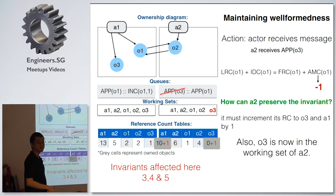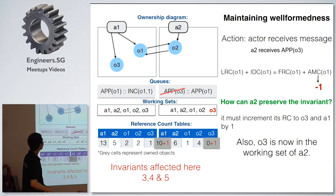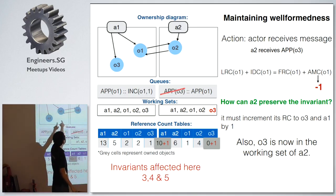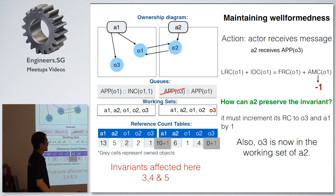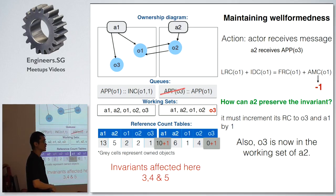O2 can have a reference to O1 — there could even be a cyclic reference — but it doesn't matter in this case because we don't count O-to-O references. We only count A-to-O references. There can only be one writable A-to-O reference at any one time. For reading, you can have multiple readers if nobody is writing.